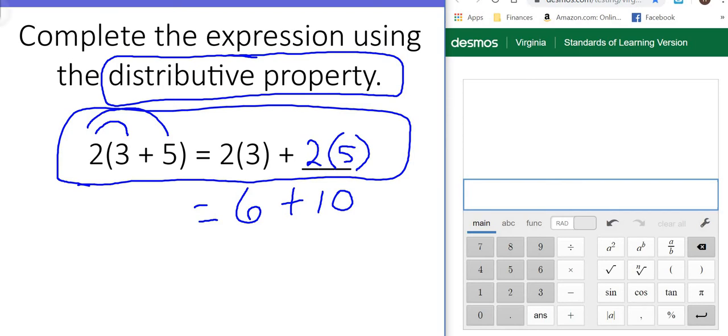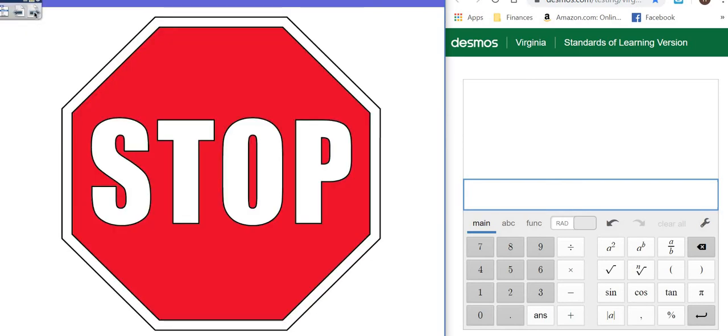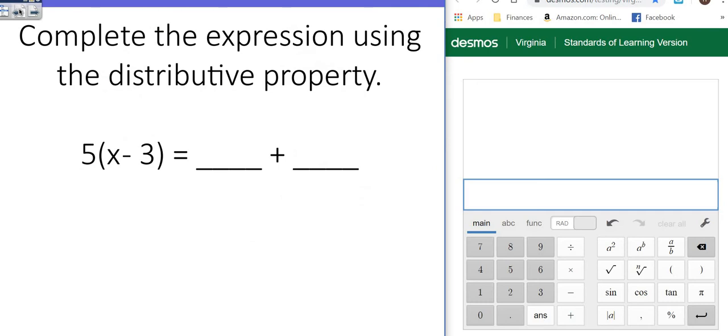Okay, so let's go ahead and move forward. Oops, I skipped one. It says complete the expression using the distributive property again. So we're going to look at it. We're going to multiply here and here.